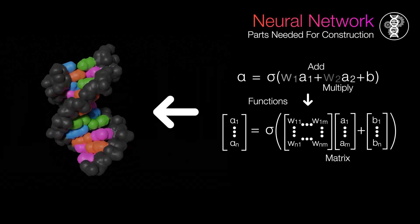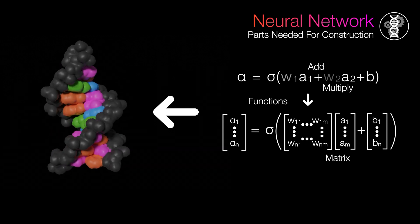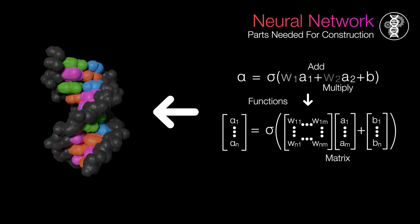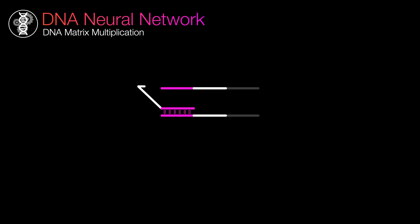And there you have it, that's all the components you need for a neural network. But neural networks are huge, so you're going to need to know how to implement matrices into DNA.